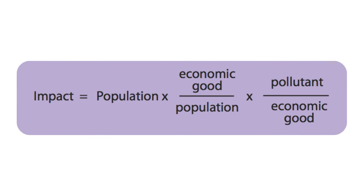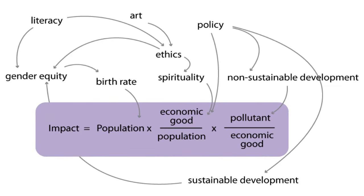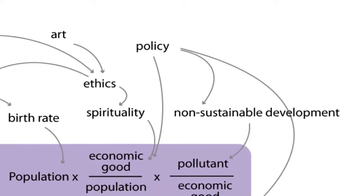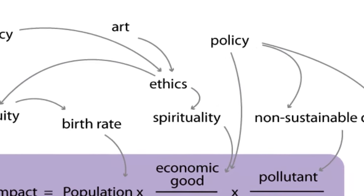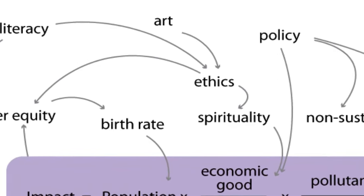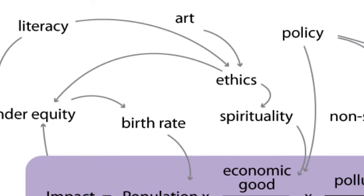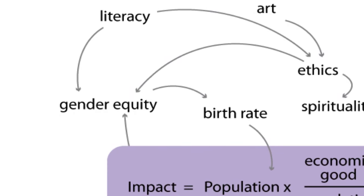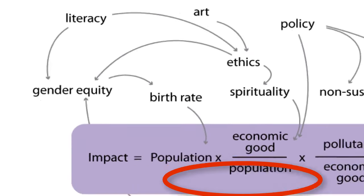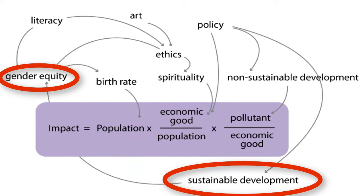One way to create more options for higher impact interventions is to expand the boundaries of the problem. In this image, we use the notation of causal loop diagrams to show how the IPAT variables are influenced by a number of other variables. Each arrow shows a causal connection — for example, sustainable development in a society is correlated with greater gender equity, which leads to lower birth rates and reduced population.